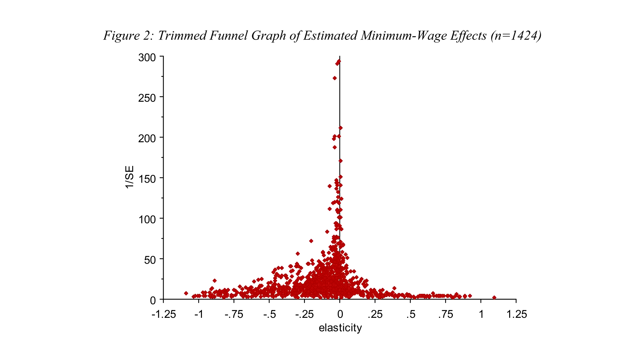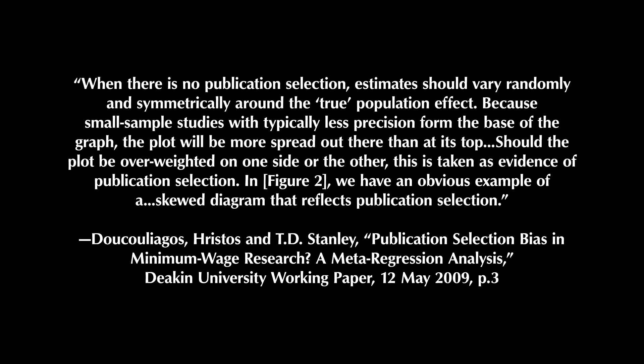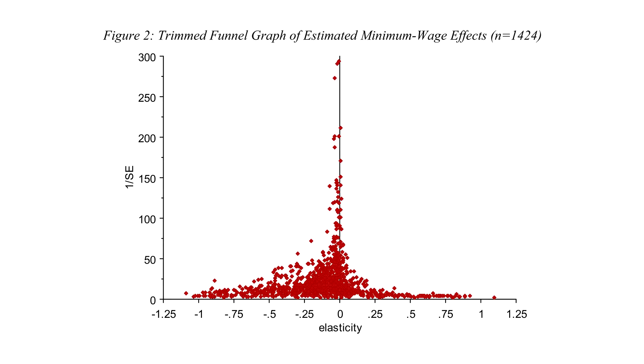The study's authors have their excuse already. On page 3, they say: when there is no publication selection, estimates should vary randomly and symmetrically around the true population effect. Because small sample studies with typically less precision form the base of the graph, the plot will be more spread out there than at its top. Should the plot be over-weighted on one side or the other, this is taken as evidence of publication selection. In Figure 2, we have an obvious example of a skewed diagram that reflects publication selection. Really? That's what it means — publication bias. It couldn't possibly be because there actually are disemployment effects of minimum wage, and it's actually very difficult to get a positive employment effect no matter how badly you do the study, could it?